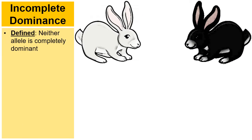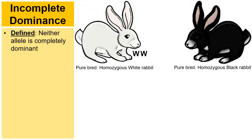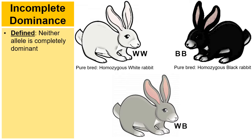Let's look at the pattern called incomplete dominance — this is where neither allele is completely dominant over the other. In this case we have a purebred, which is another way of saying a homozygous white rabbit. I'm going to use B for black. How do you end up with gray? One parent passes down the white allele, one parent passes down the black allele. If white was dominant, the babies would be white. If black was dominant, the babies would be black. But with incomplete dominance, they blend together — neither allele is completely dominant.